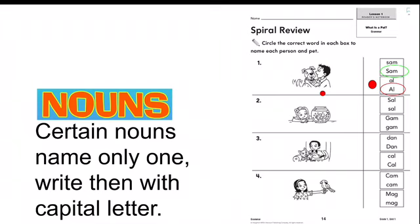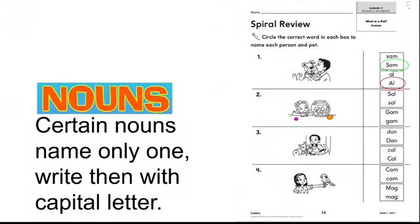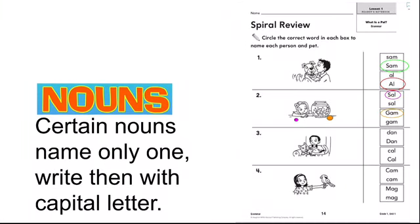Now let's see number two. I see a girl named Sally. And I see the pet fish named Gam. And let's remember that if the name is for only one, then you need to write it down with a capital letter in the beginning. So you need to circle Sally in the box that has capital letter. And you need to circle Gam with capital letter. Because it's for only one.